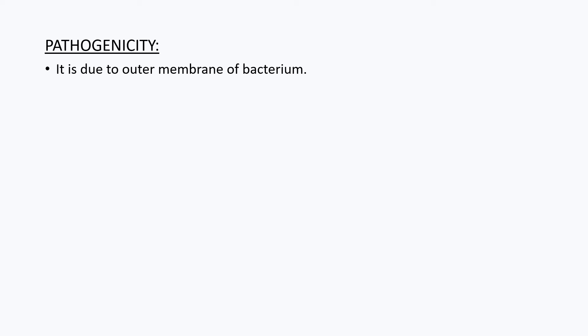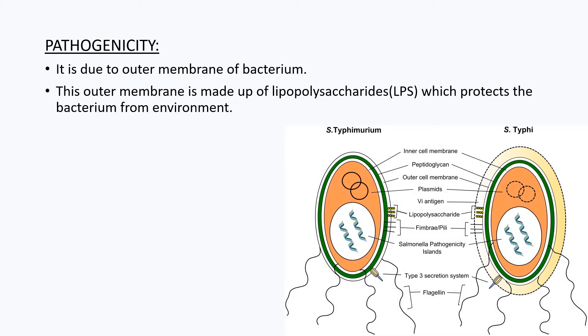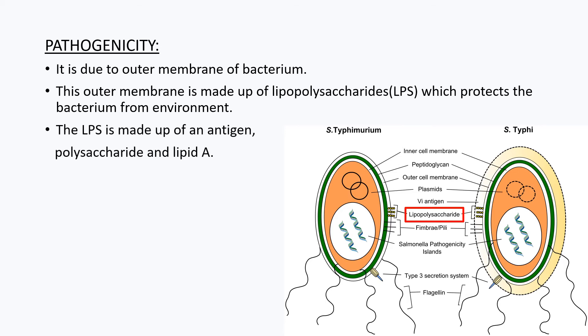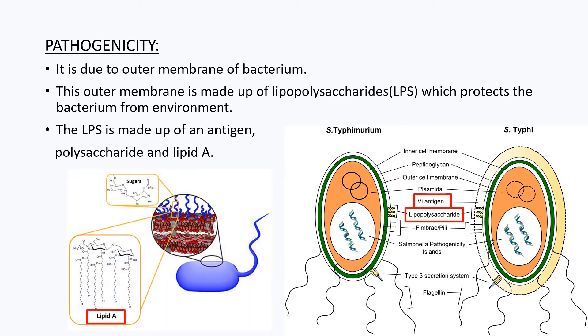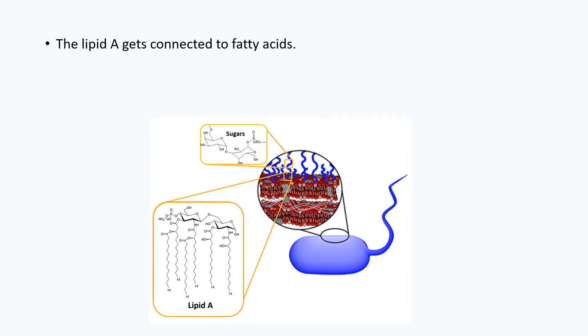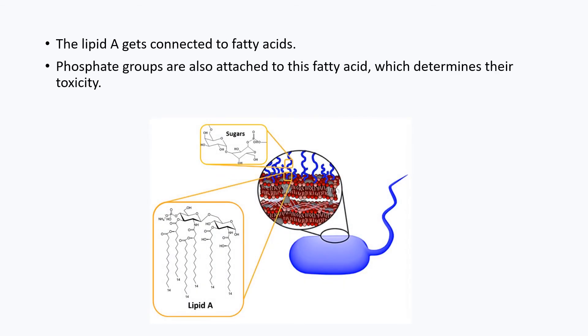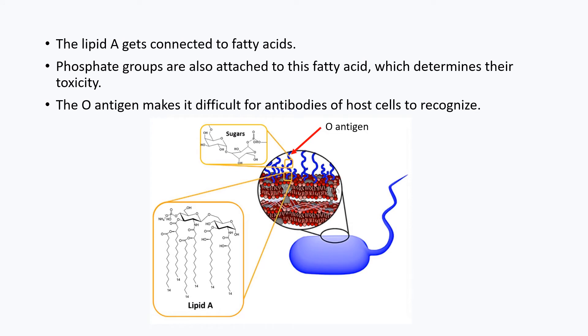Let's know what is pathogenicity. Pathogenicity is the ability of an organism to enter the host and cause disease. This pathogenicity is due to the outer membrane of the bacterium. This outer membrane is made up of lipopolysaccharides, which protects the bacterium from the external environment. The lipopolysaccharide is made up of an antigen, a polysaccharide, and a lipid. The lipid gets connected to fatty acids. Phosphate groups are also attached to this fatty acid, which determines their toxicity. The O antigen makes it difficult for antibodies of host cells to recognize the bacteria.